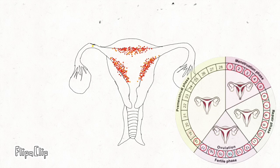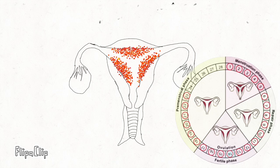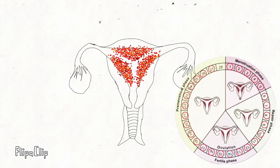Day 18 to 28 is called the premenstrual phase. The uterine lining continuously thickens until it becomes richly supplied with blood vessels. During this time, implantation of an embryo could happen if fertilization occurred. However, if fertilization doesn't occur, the menstrual cycle will repeat and the unfertilized ovum will flow out of the uterus together with the menstruation discharge.